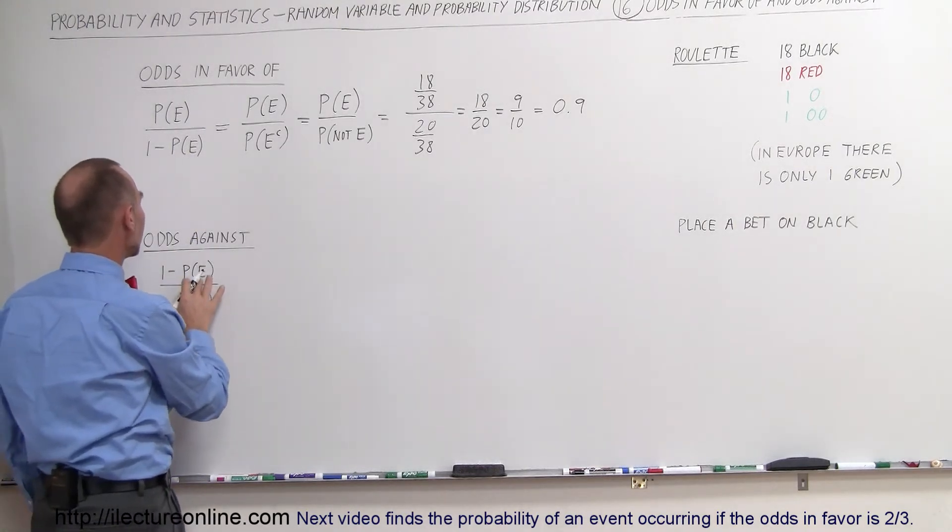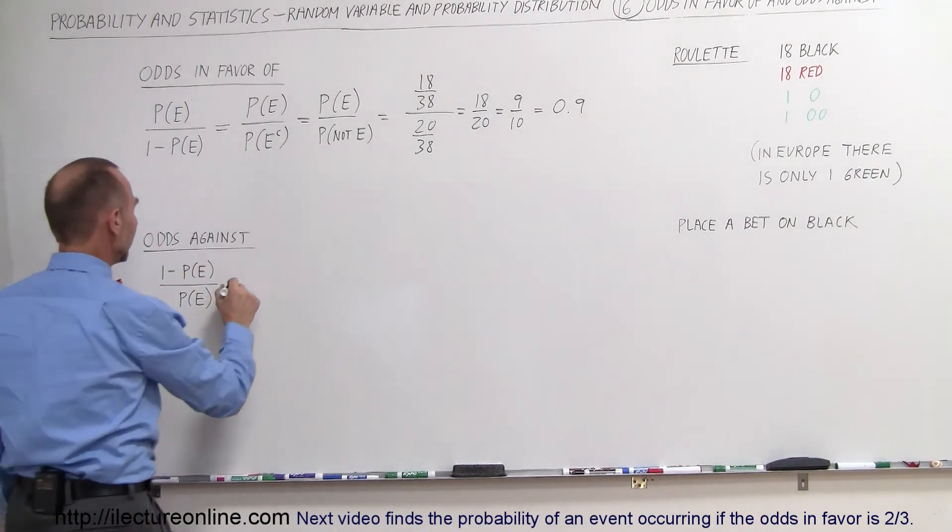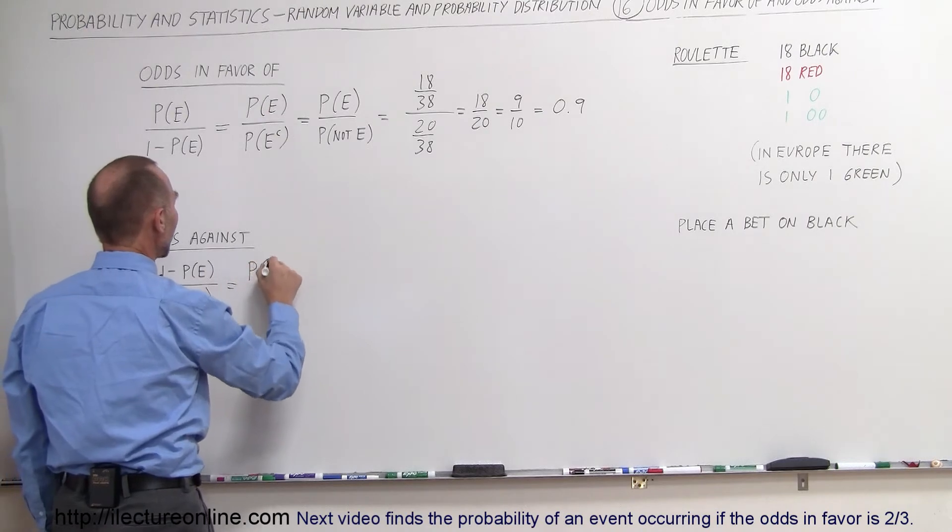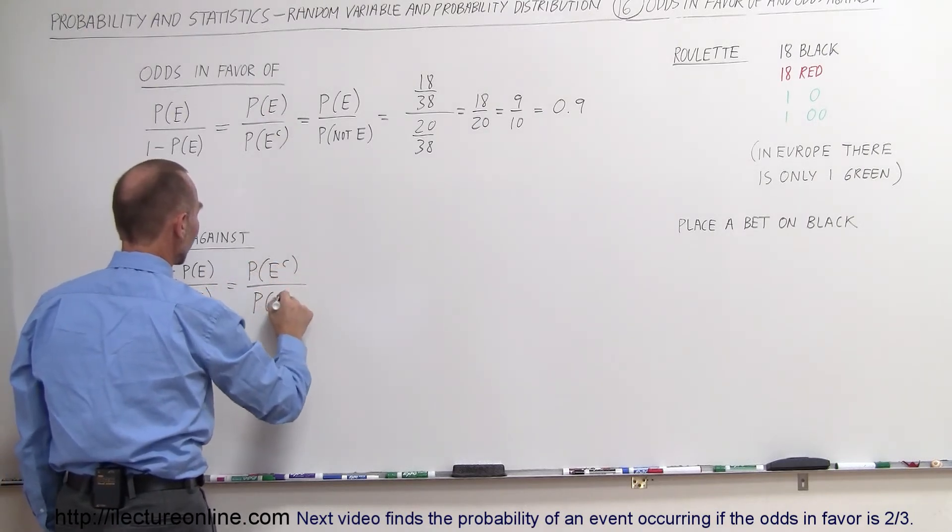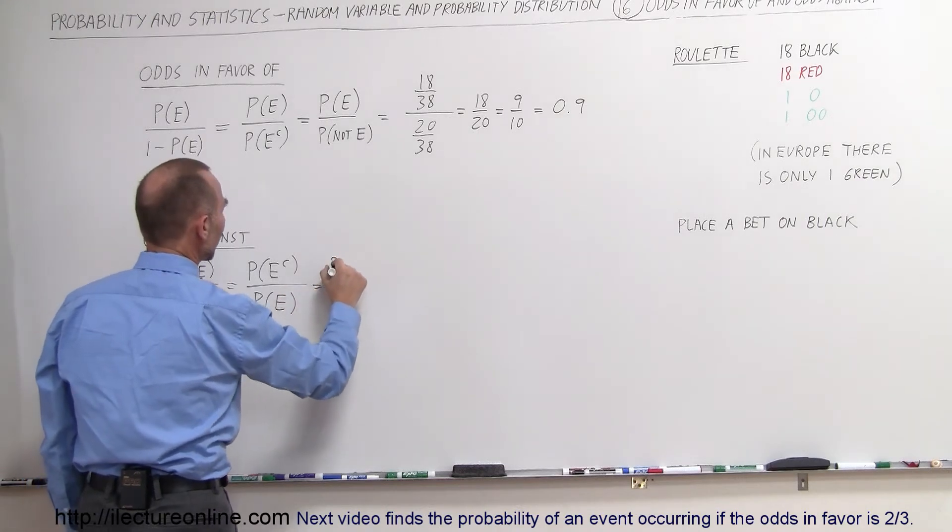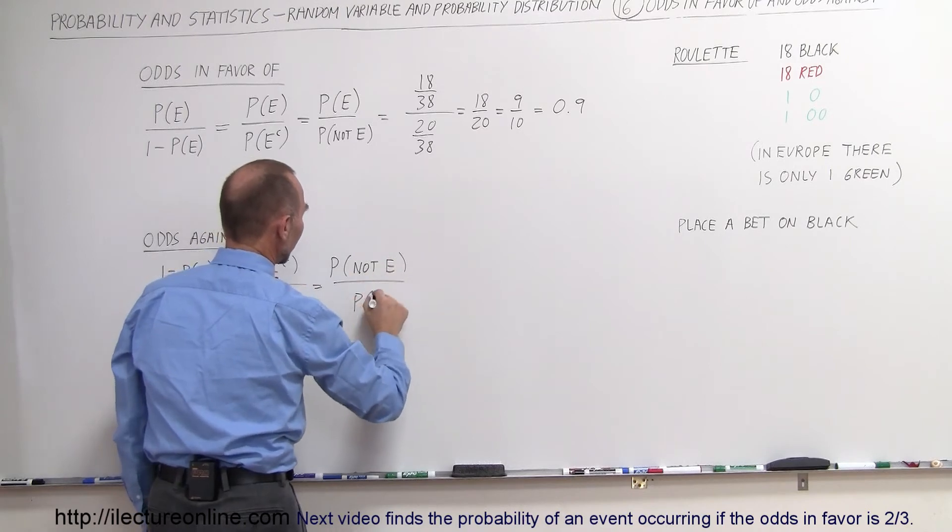that's 1 minus the probability of the event occurring, divided by the probability of the event occurring. Or it's the probability of the complement of the event, so not occurring, divided by the probability of the event occurring, which is the probability of not E divided by the probability of E.